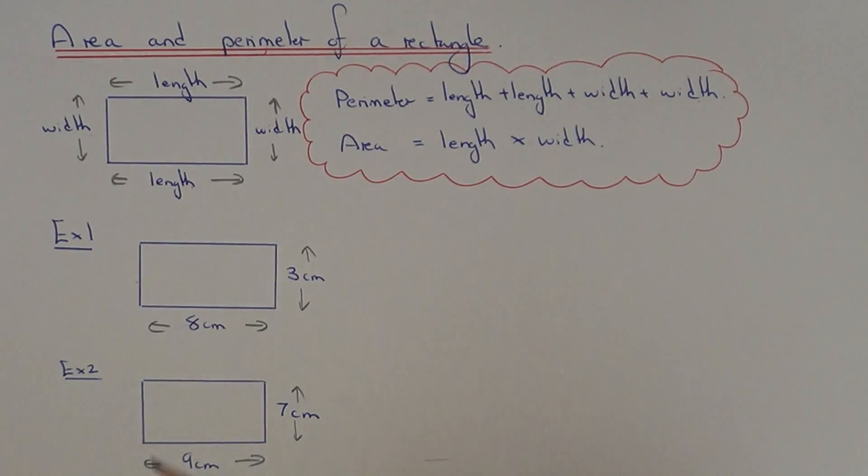For the area of a rectangle, you just have to multiply the two sides of the rectangle together. So the area will be the length multiplied by the width of the rectangle.